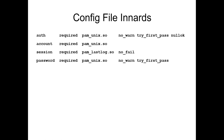That gets you something like this — from a FreeBSD system. We have here an auth rule with the 'required' control. The shared library is pam_unix.so and these are the options. You'll have four types of rules: auth, account, session, and password.